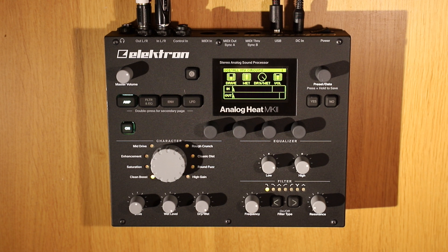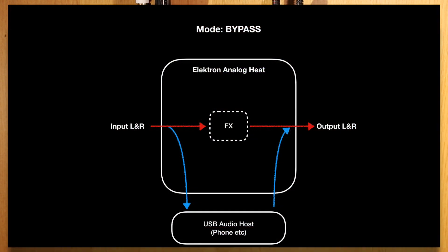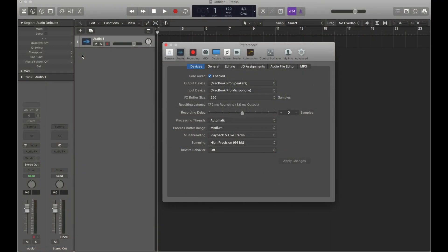The last mode, which was mentioned briefly before, is Bypass, where the USB audio is not going through the heat's effects. This makes it perfect to be used as a sound card for a computer, for instance. When setting the analog in-out to off, neither the analog in nor analog out are routed to the heat's effects, for highest fidelity. Here's an example of how it can look in Logic when using the heat as a sound card.